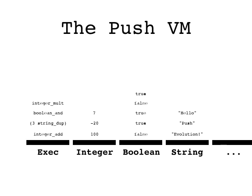Here's a diagram of a Push interpreter, or a Push virtual machine, with data on the stacks of several types. The exec stack contains code and is central to the way the interpreter works. So now let's look at how Push programs are executed.